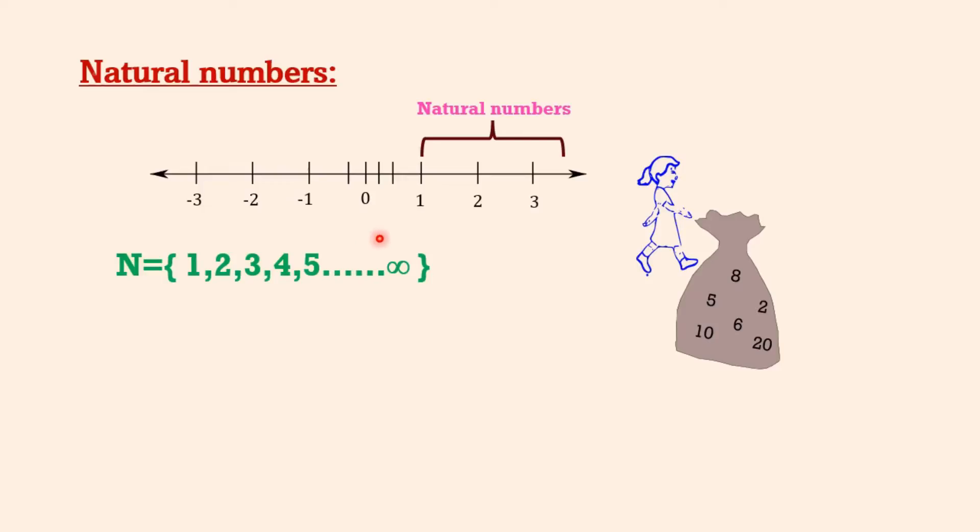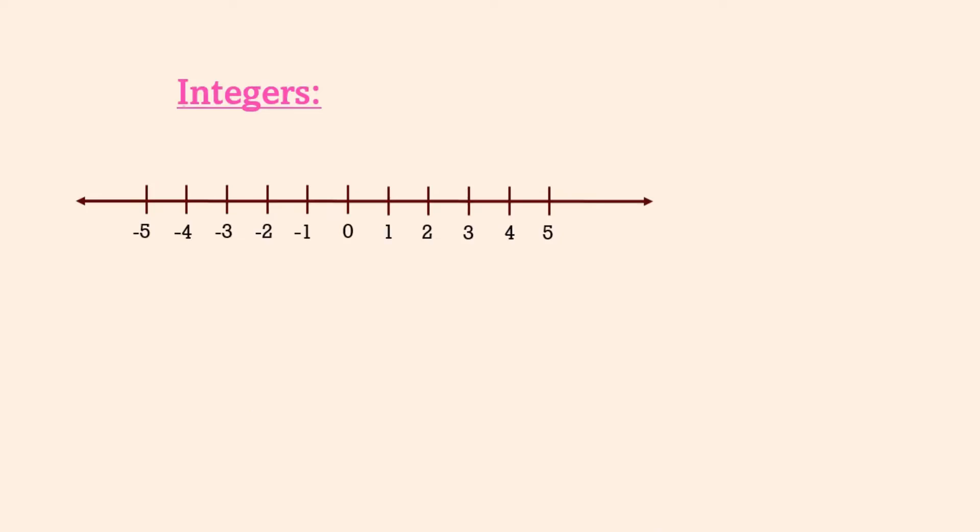She turned and on her way back she saw a special number zero and picked it up and put it into her bag. She now has the collection of whole numbers, which is denoted by the symbol W.